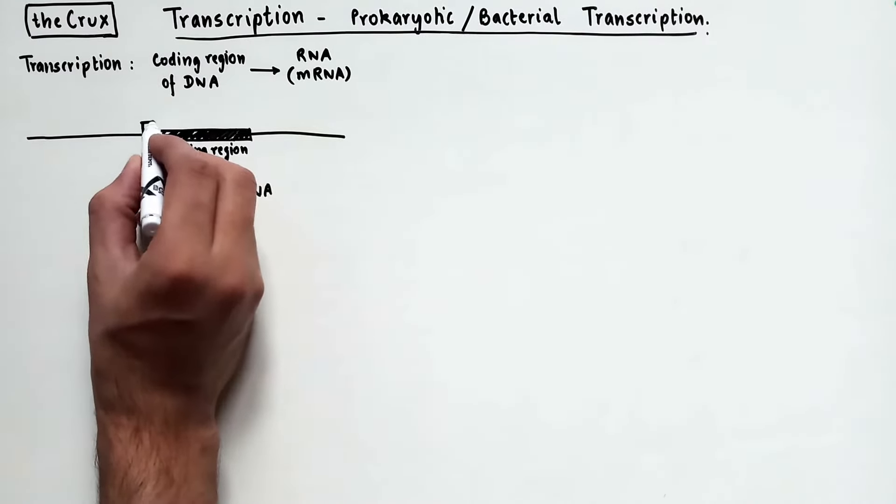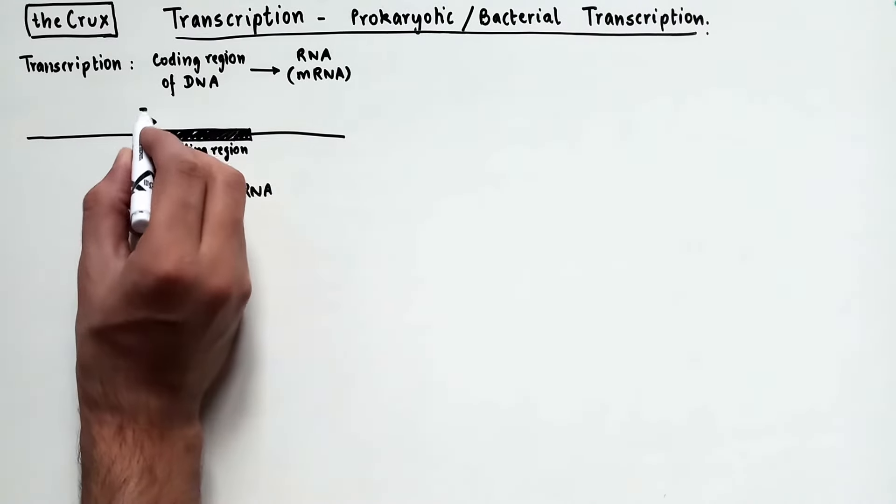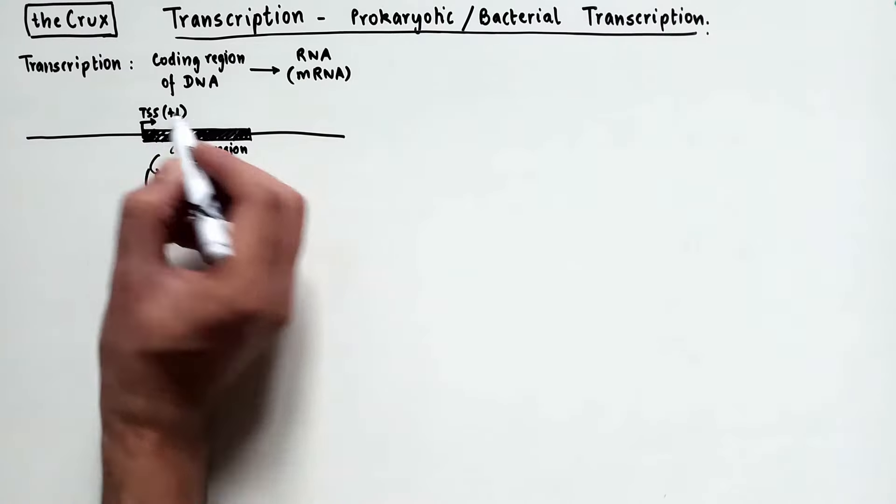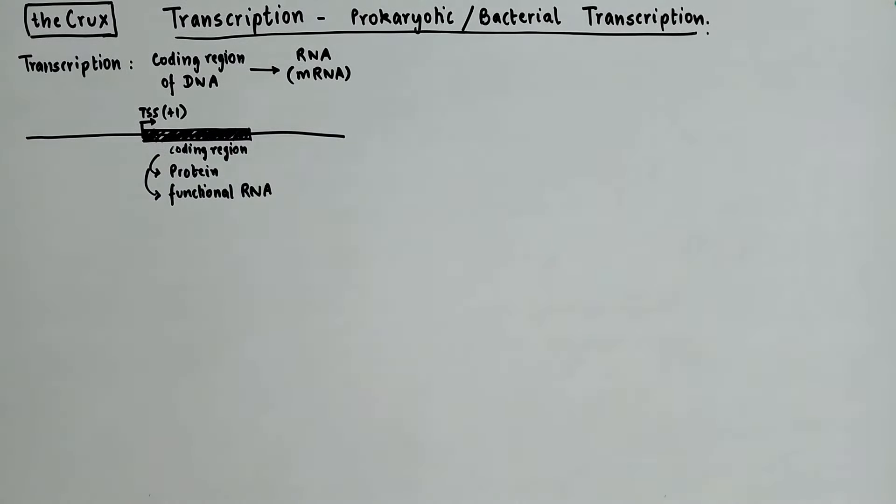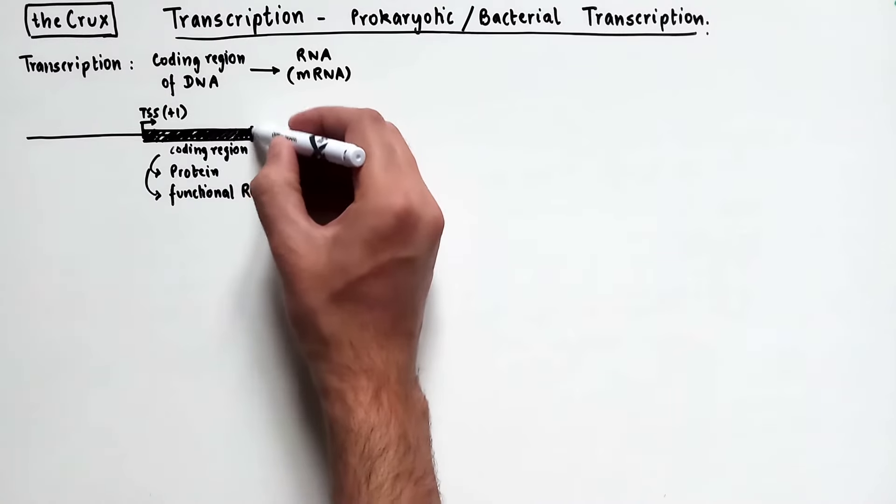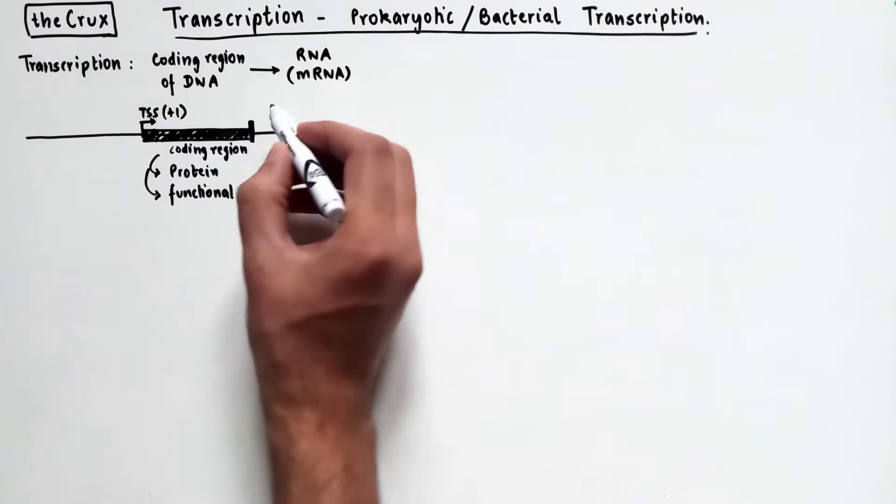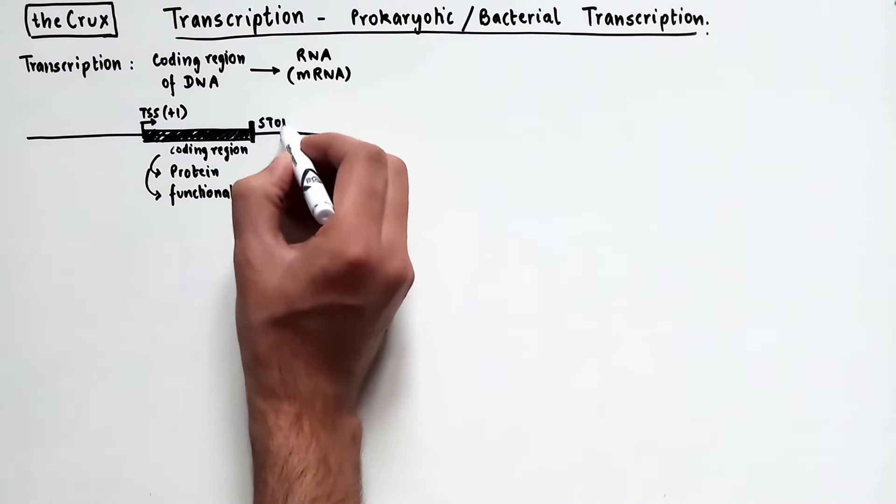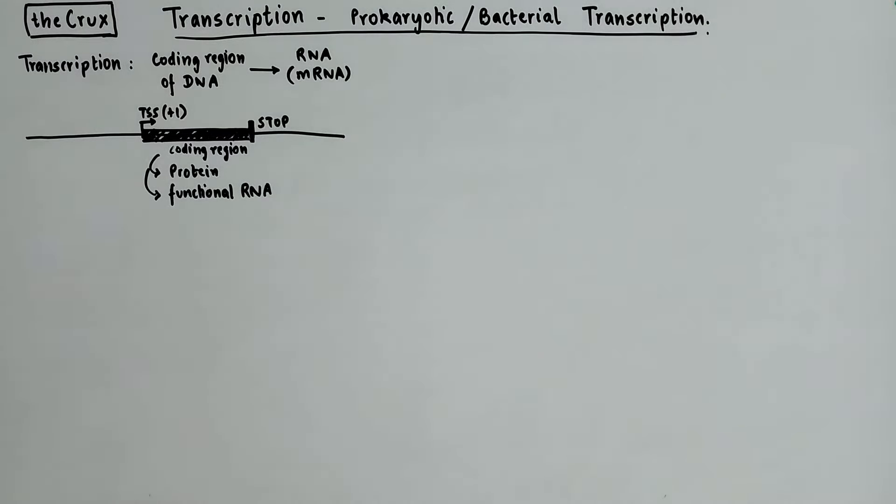And the start of this coding region is usually referred to as the transcription start site, or TSS for short. And the first base of the coding region is called the plus one position for reference to everything else around it. And at the end of the coding region, we have the stop site, which marks the end of the coding region.